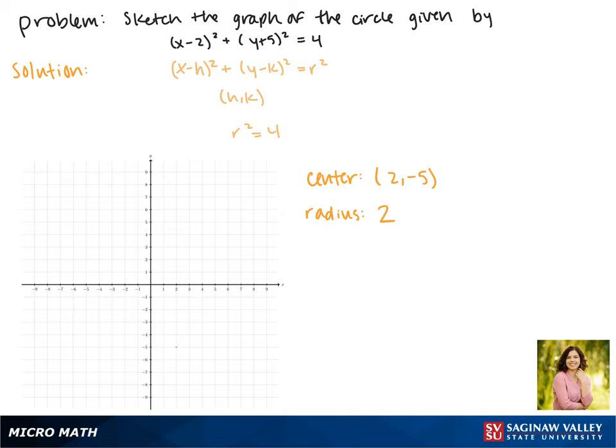And now we can graph the circle. The center is at the point 2 negative 5 and then it'll pass through these points that are each two units away. So this is the graph of our circle.